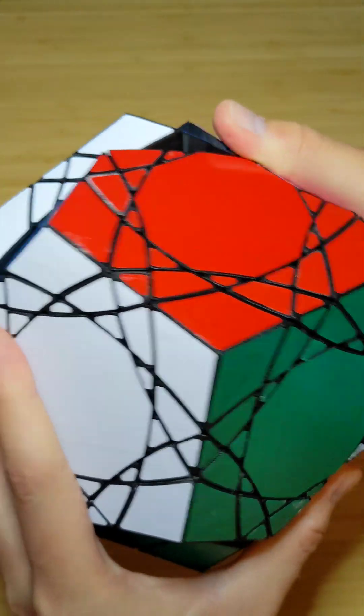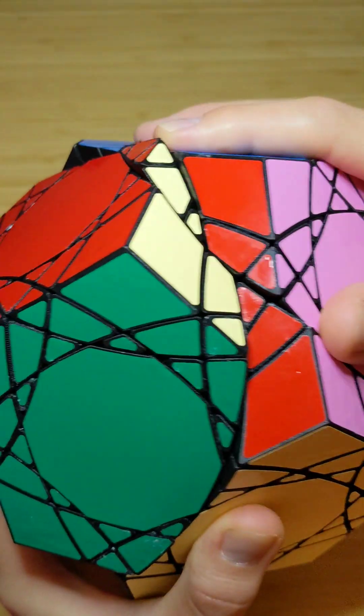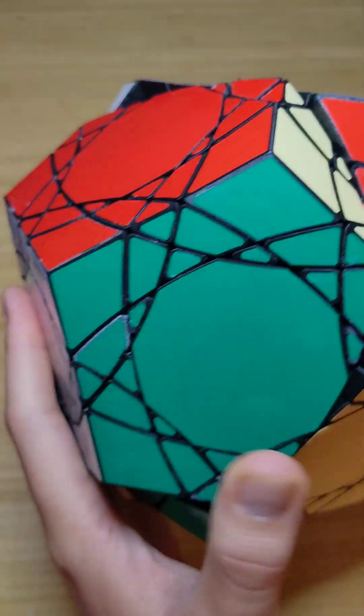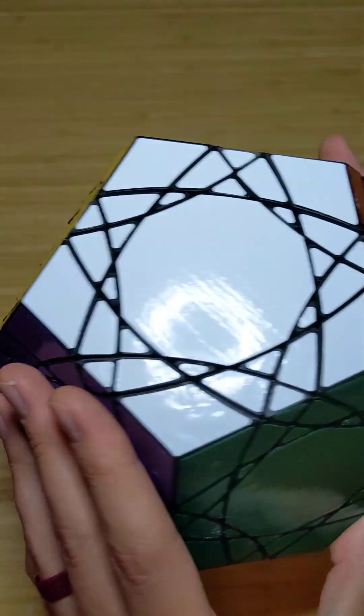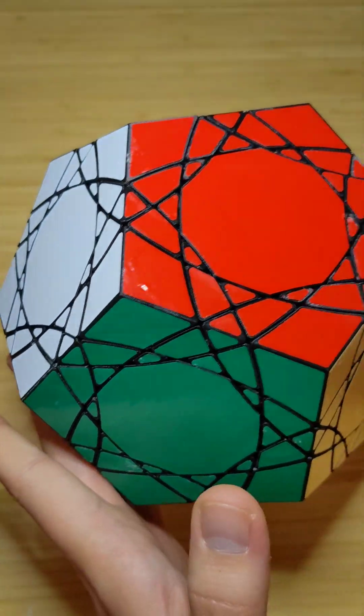The jumbling with smaller groups of edge pieces is a feature of puzzles that are in the middle of the Radiolarian series. And as you can see, this is a massive puzzle. It weighs a little over 1.3 kilograms, or around 3 pounds.